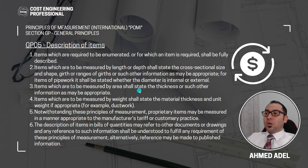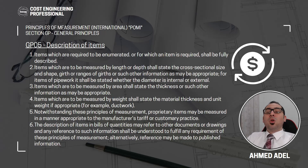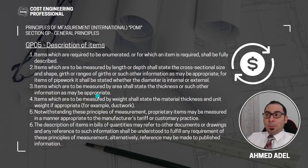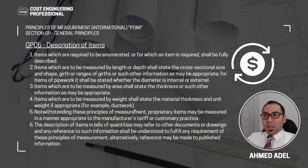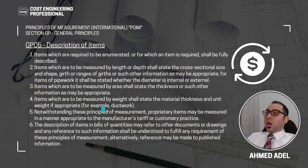Items which are to be measured by area shall state the thickness or such other information as may be appropriate. Items which are to be measured by weight shall state the material thickness and unit weight if appropriate - for example, ductwork for AC systems measured in kilograms. In that case you have to state the material, thickness, and unit of weight.